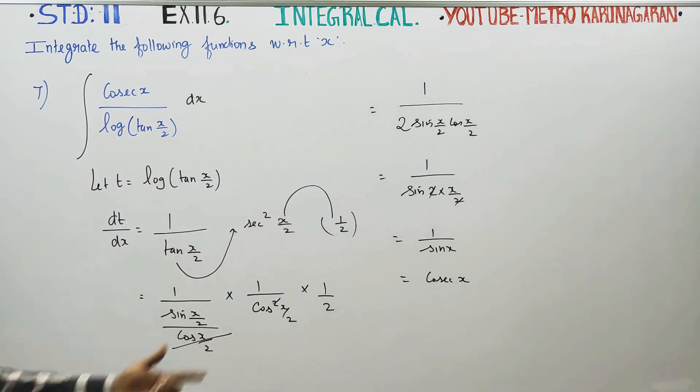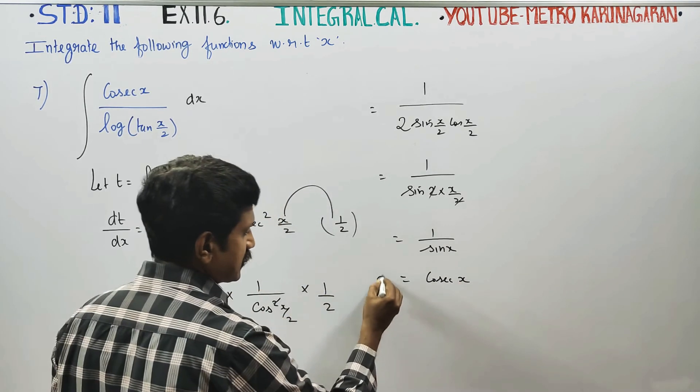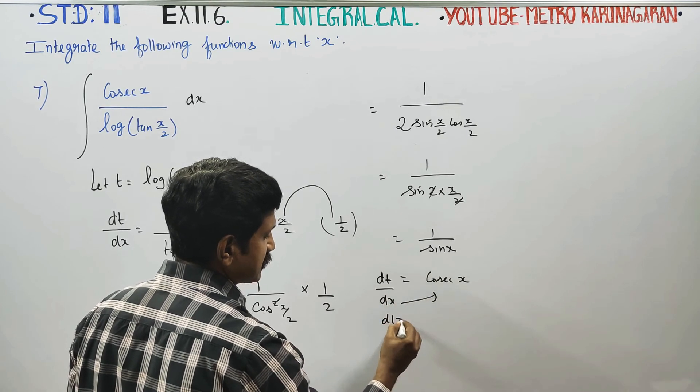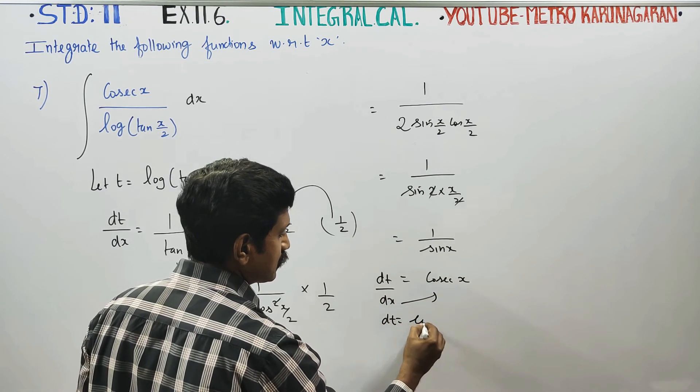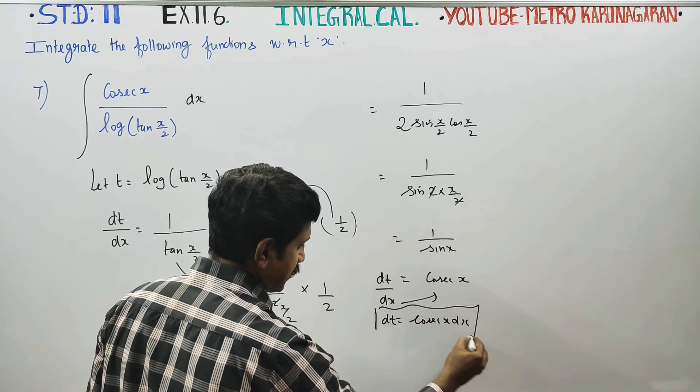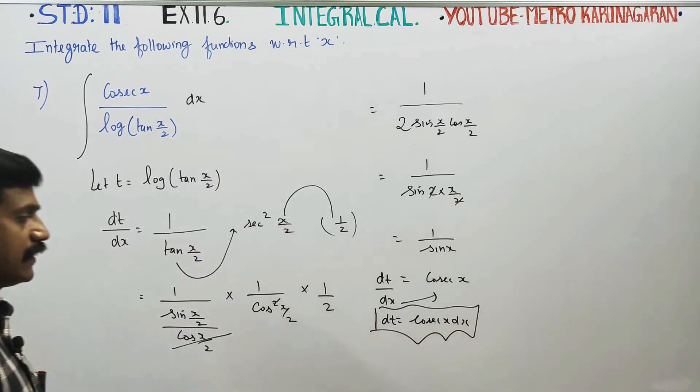So our differentiation gives dt by dx equals cosecant x. Cross multiply: dt equals cosecant x dx. This is my dt. With these values, come to your main problem.